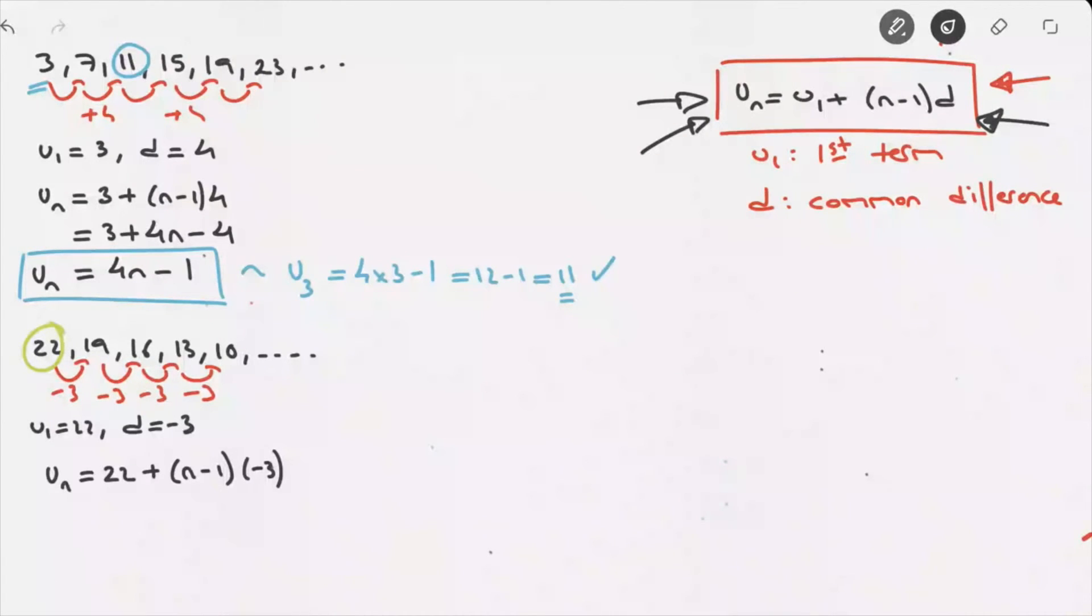We now distribute the negative 3 across those parentheses, leading us to 22 minus 3n, and careful of a sign error, plus 3.